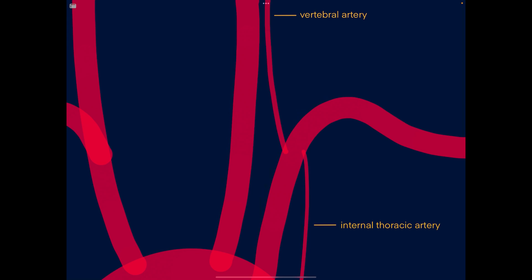The next biggest branch is the internal thoracic artery, also called the internal mammary artery. This goes inferiorly back into the thorax and gives off the anterior intercostal arteries, which anastomose with the posterior intercostal arteries. It continues inferiorly just posterior to the costal cartilages, dividing into the superior epigastric and musculophrenic arteries at about the 6th intercostal space.